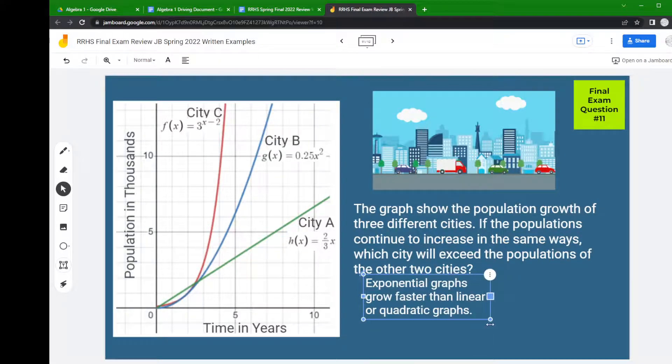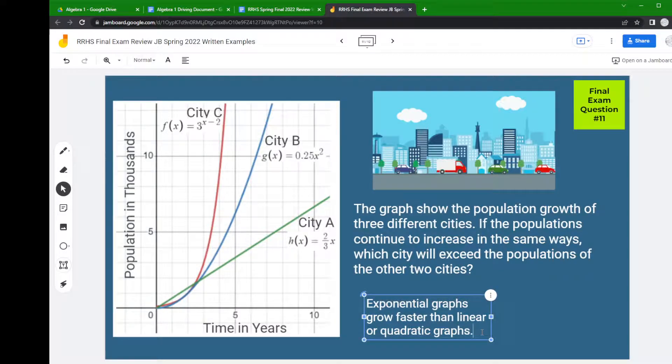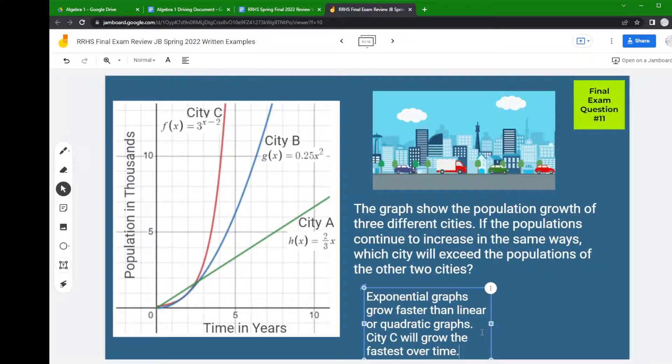So that means City C, which is the exponential graph, will grow the fastest over time. The biggest part of this question is making sure you can identify which was the exponential one. Look where x is in the exponent—that's the fastest growing graph.